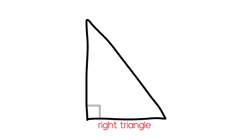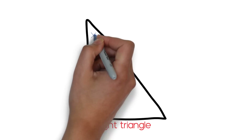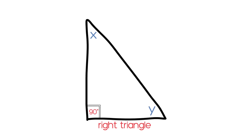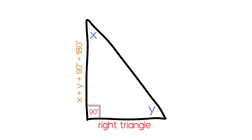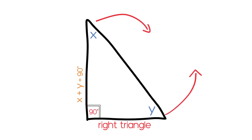A right triangle has one interior angle that measures 90 degrees, and two other interior angles. Let's call them x and y for simplicity. Since adding up the angles in any triangle gives 180 degrees, and we already have the right angle at 90 degrees, the sum of angle x and y must be 90 degrees. This also means that angle x and angle y are both less than 90 degrees — in other words, acute.